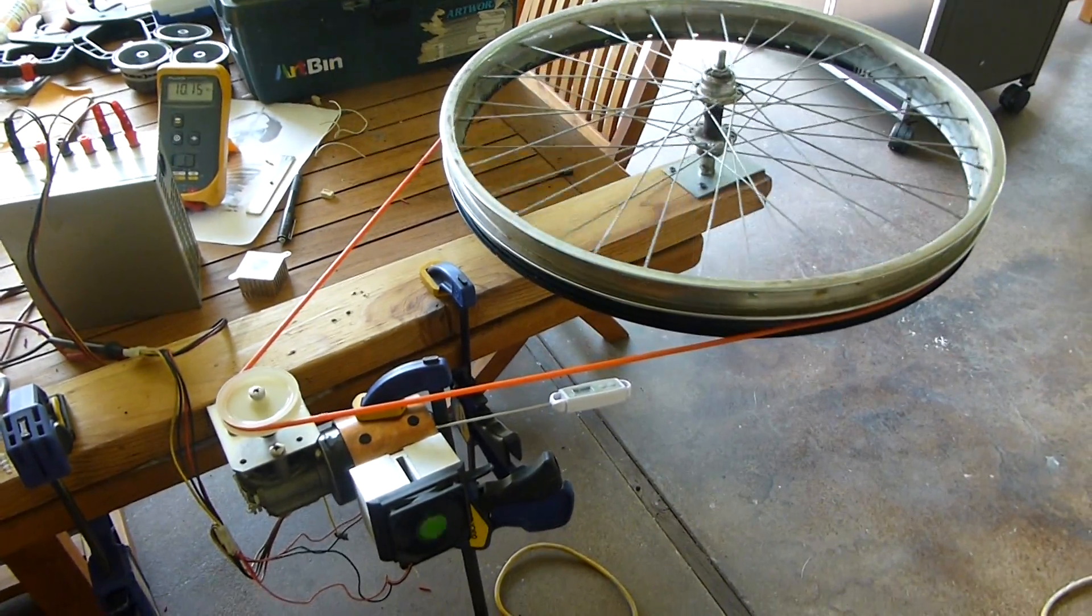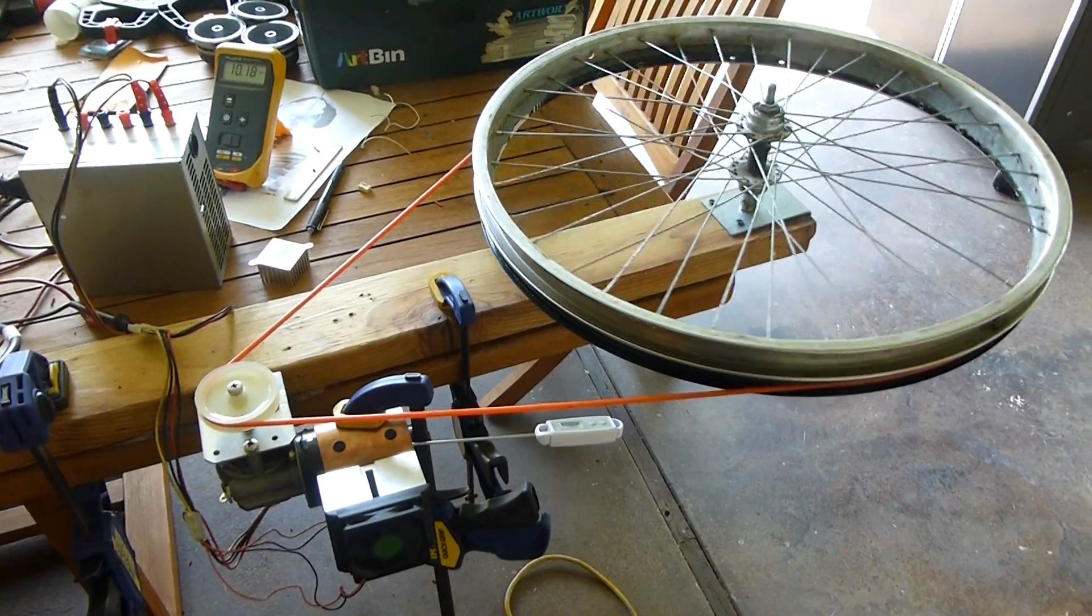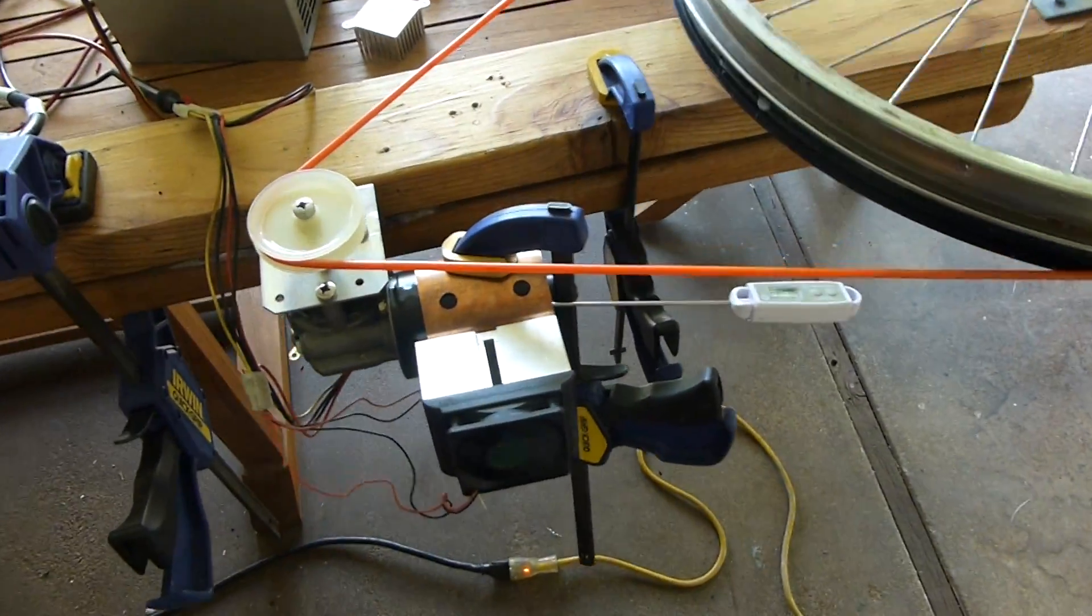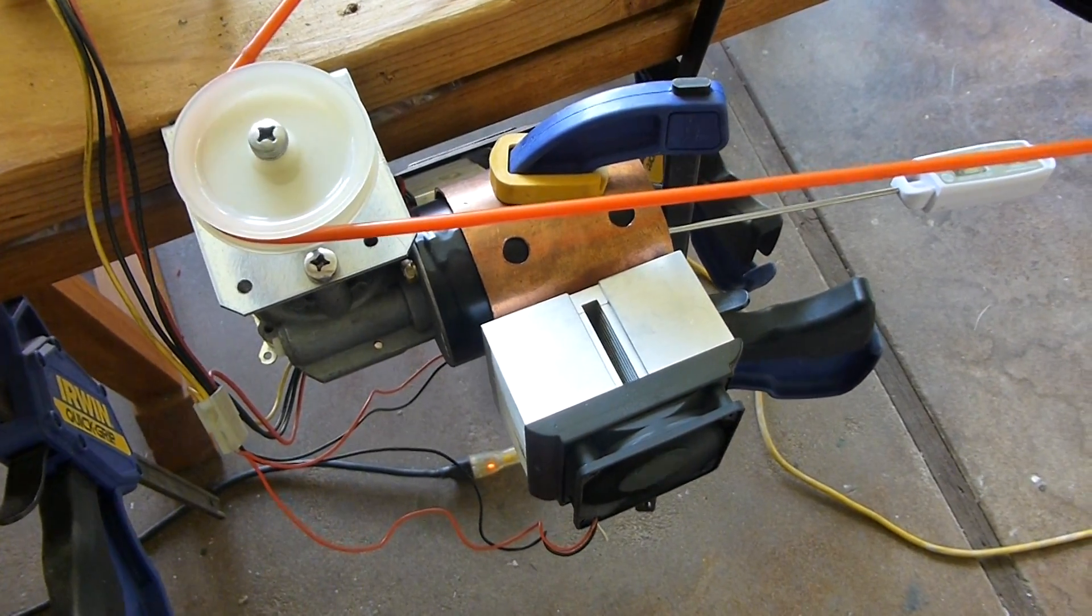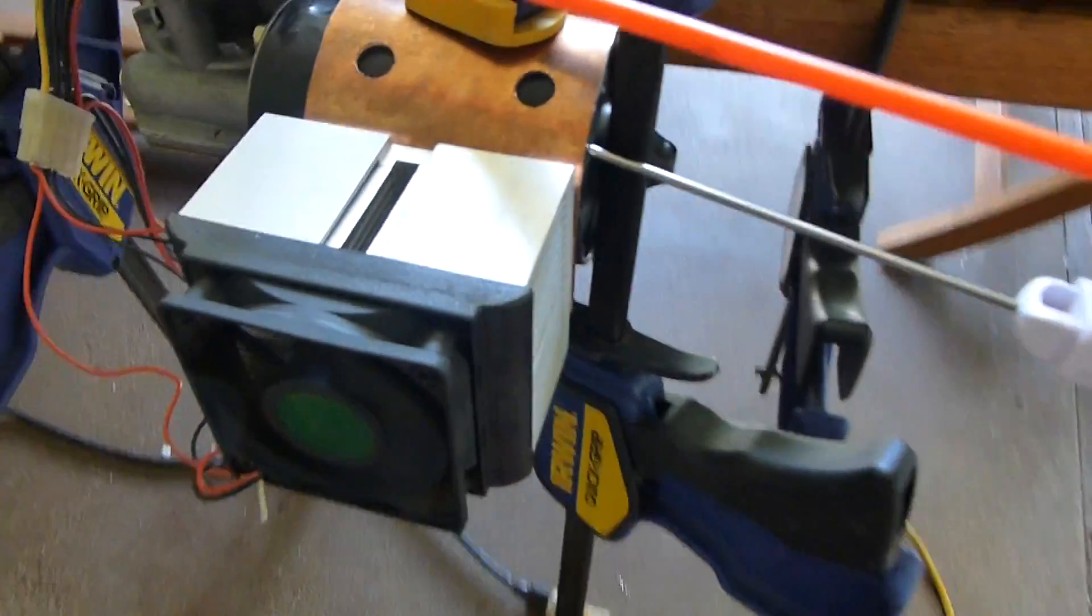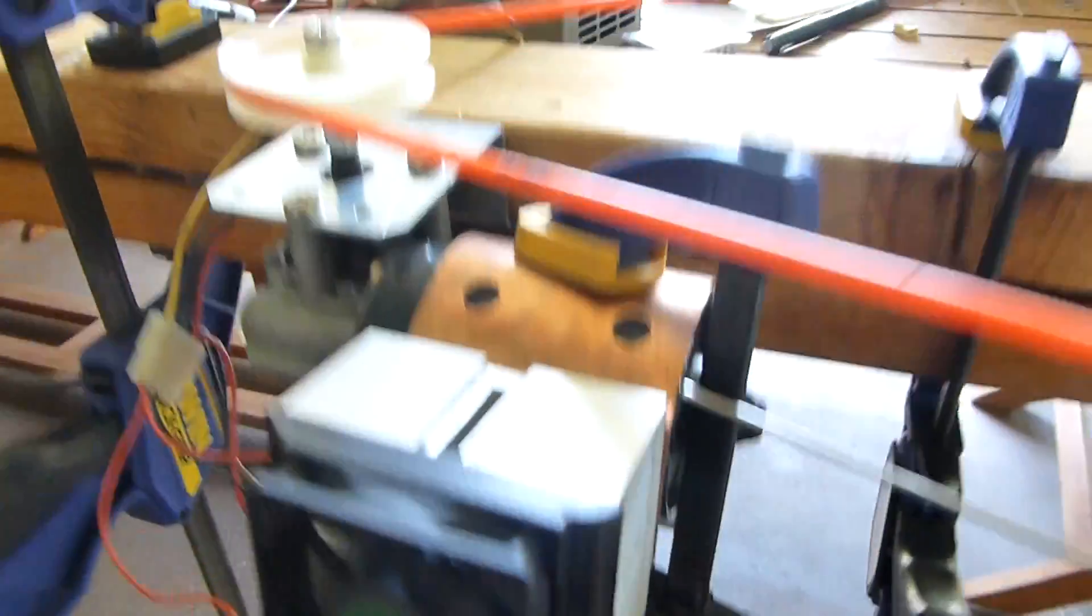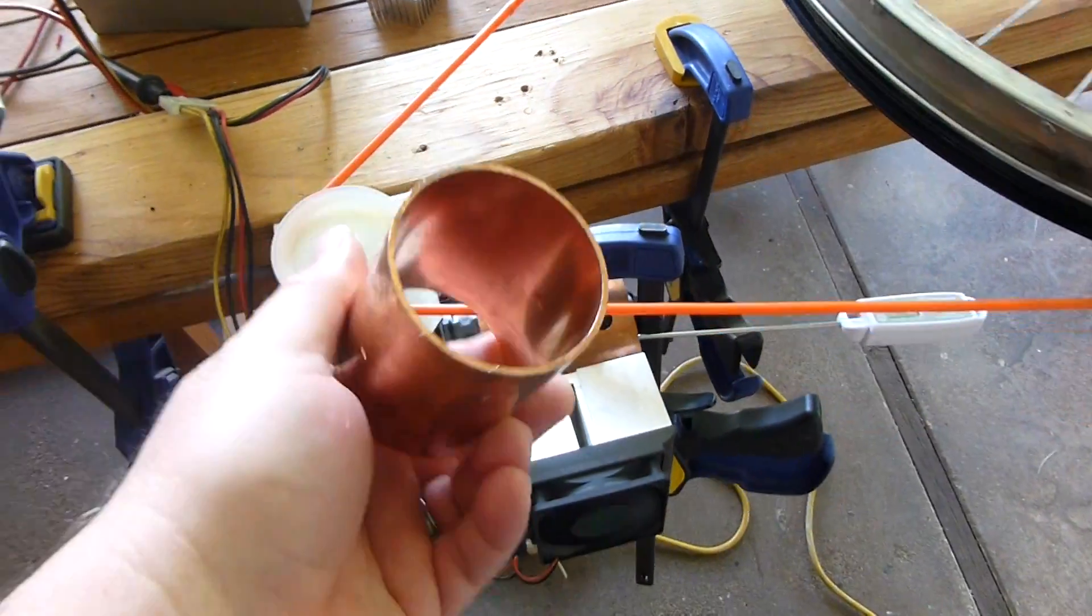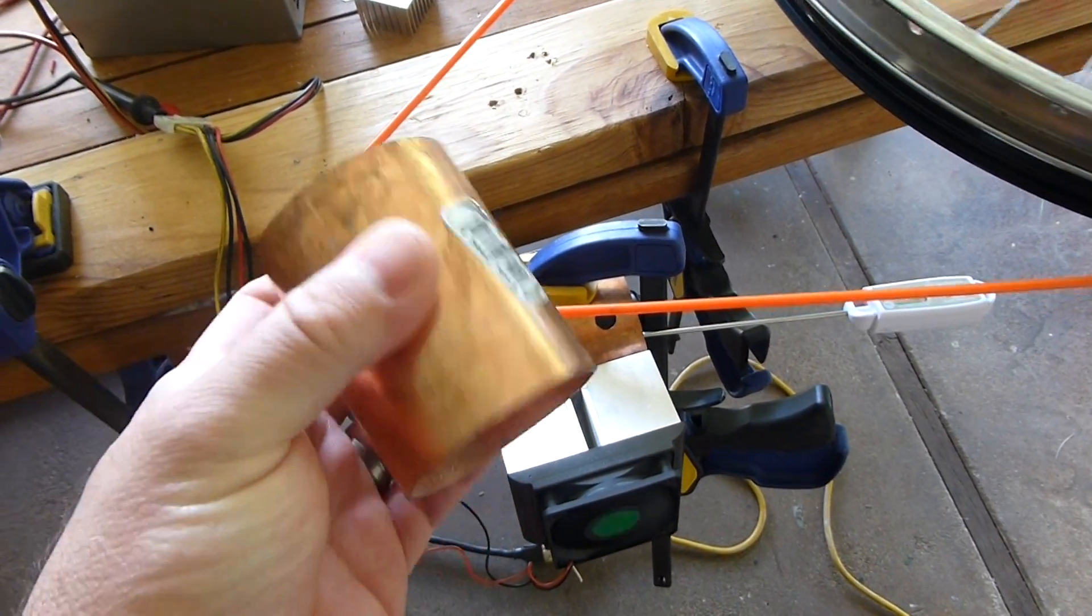Alright, here's the latest update on the wiper motor. When I last turned it on, I noticed it was getting really hot. So I cobbled together this heat sink here, which is a simple copper coupling that I picked up at the local home improvement center for under $2.